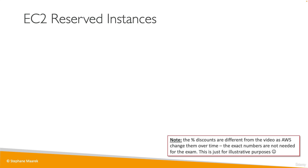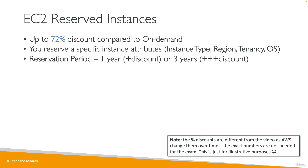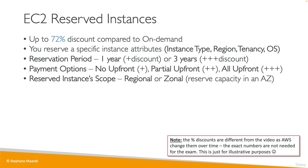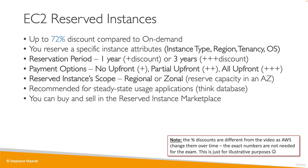Now for reserved instances — the numbers I show you can change over time, so I will not update this video every time, but it gives you an idea. Reserved instances give you a 72% discount compared to on-demand. You reserve a specific instance attribute, for example the instance type, the region, the tenancy, and the OS. You specify a reservation period of one year or three years to get even more discounts, and whether you want to pay upfront, partially upfront, or not upfront — all upfront gives you the maximum discount. In terms of scope, you choose a specific region or zone, meaning reserved capacity in a specific AZ. You would use reserved instances for steady-state usage applications, for example a database. And you can buy or sell your reserved instances in a marketplace if you don't need them anymore.